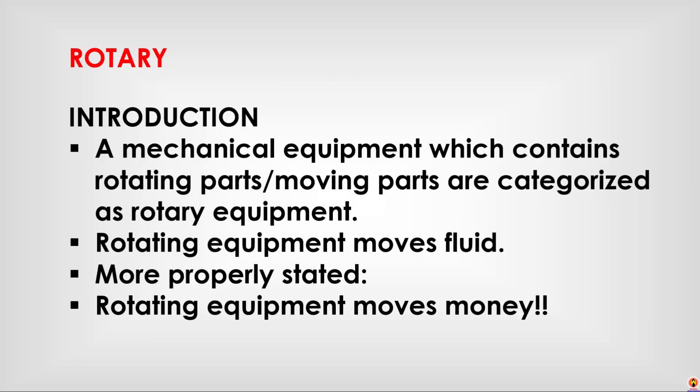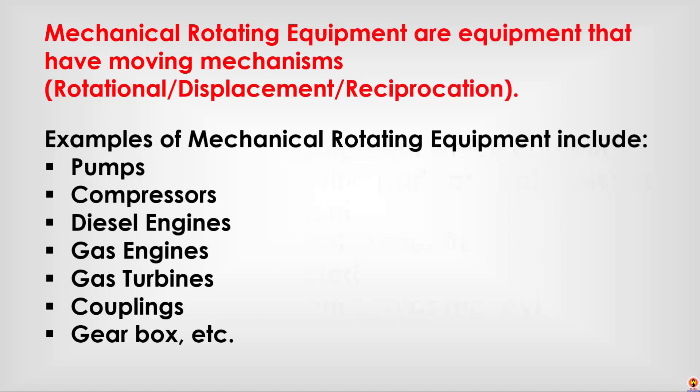Rotating Equipment Introduction: Mechanical equipment which contains rotating or moving parts is categorized as rotating equipment. Rotating equipment moves fluids — or, more properly stated, rotating equipment moves money. Examples of rotating equipment include pumps, compressors, diesel engines, gas engines, gas turbines, couplings, gearboxes, etc.